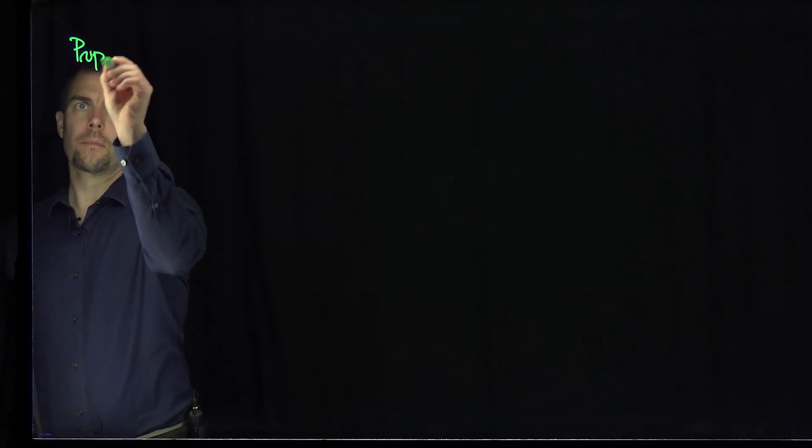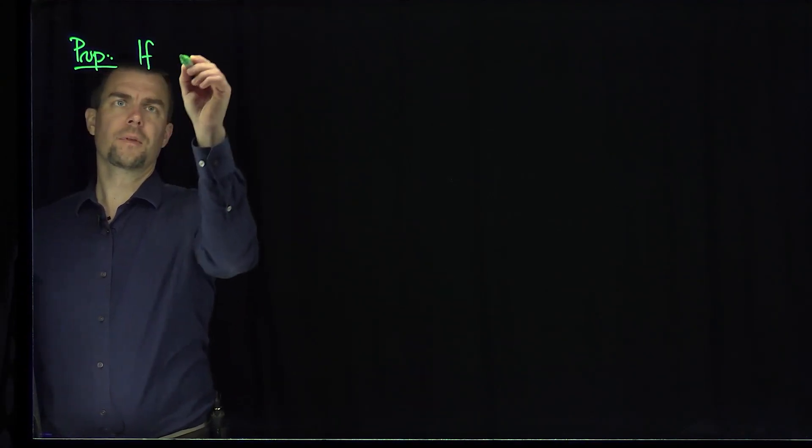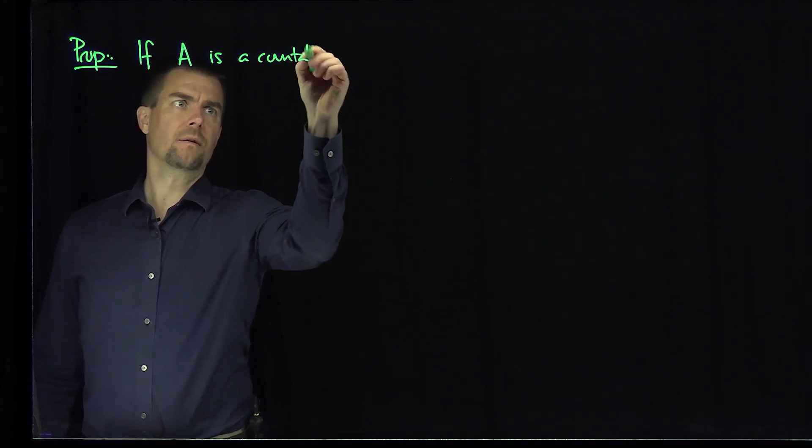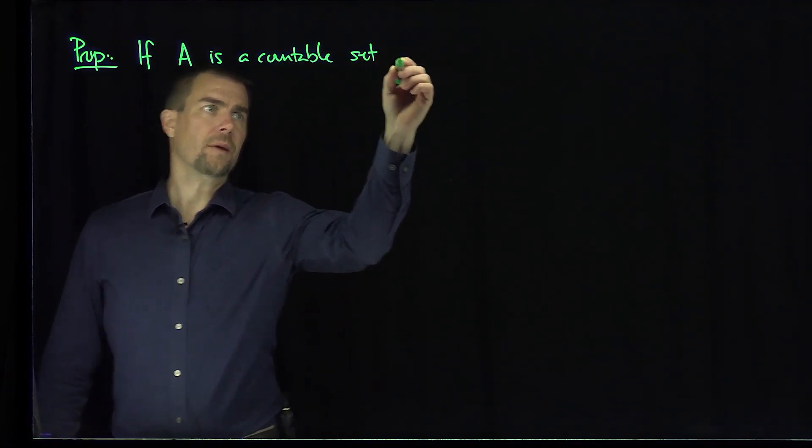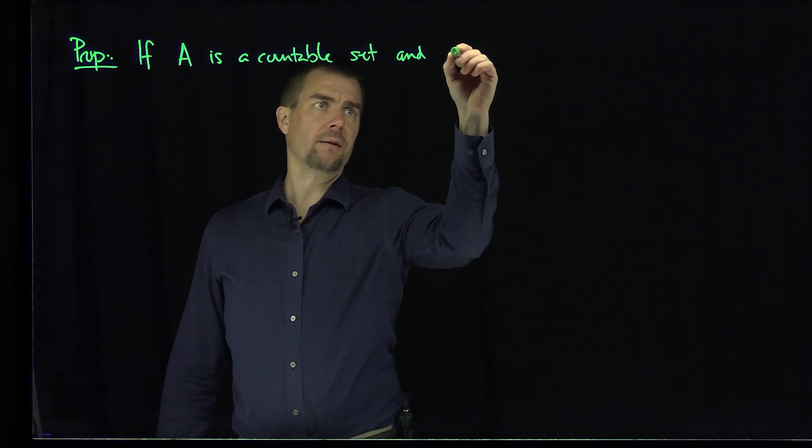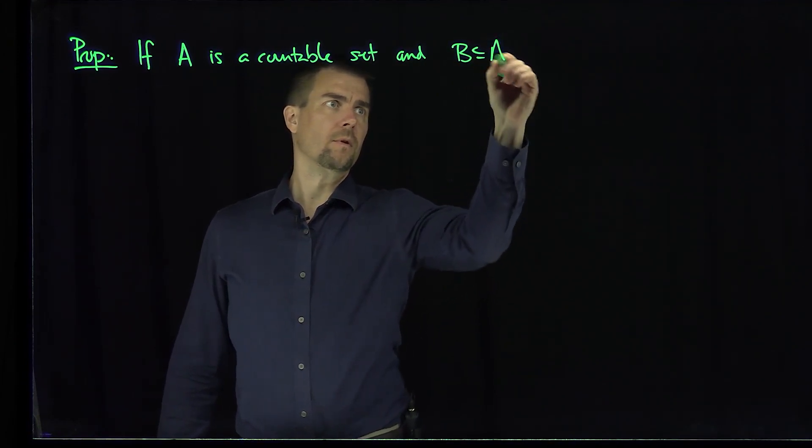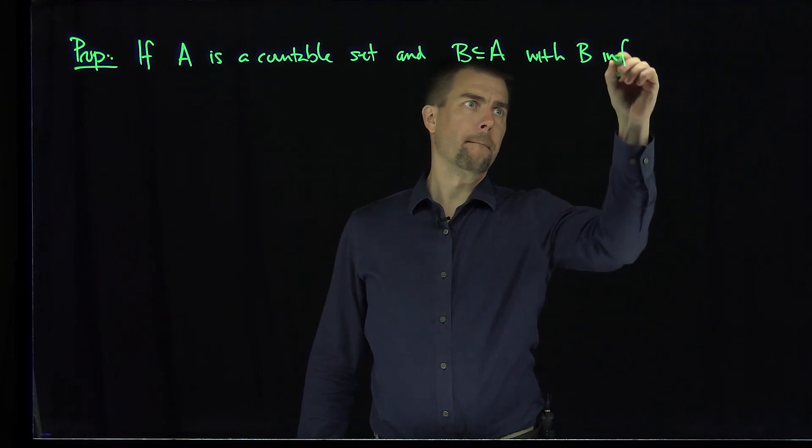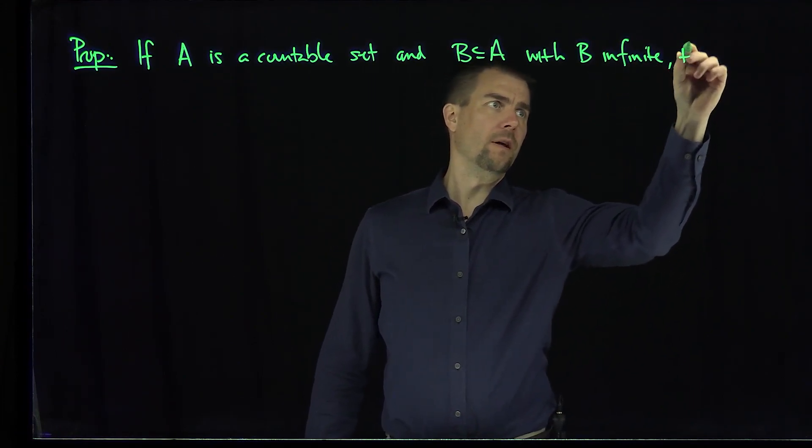Here's our first proposition. If A is a countable set and B is a subset of A with B infinite, then B is countable.